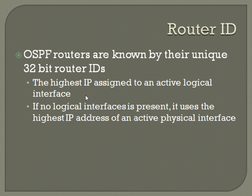If you go into interface loopback 0 and assign an IP address like 10.0.0.1 255.255.255.255, unless you specifically shut it down, it's always going to be in an up state — you don't have to unshut it like a regular physical interface. A loopback address is usually a slash 32. Make sure you have at least one loopback configured on each router participating in OSPF so you always know the router ID.